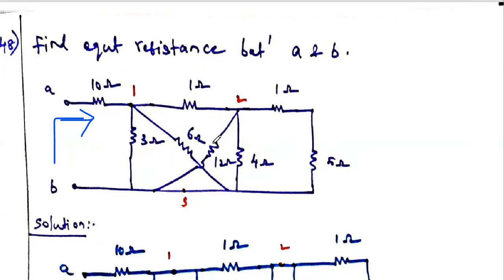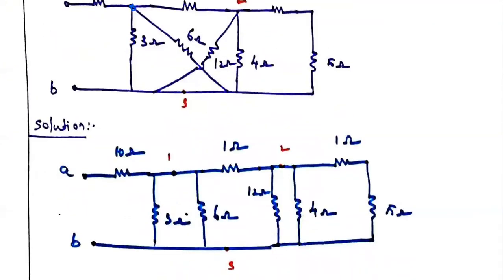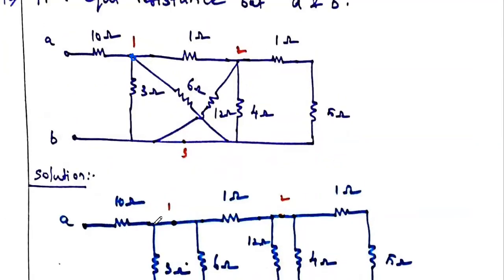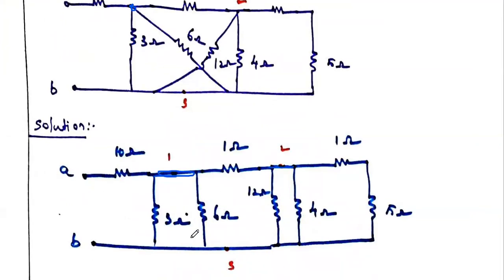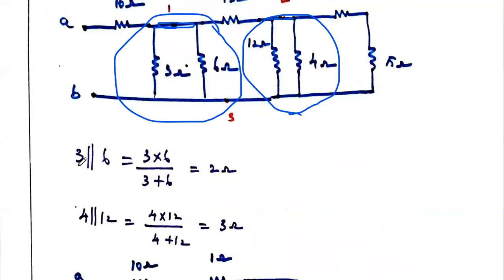Redrawing the circuit by expanding nodes one and two as lines: three-ohm and six-ohm are in parallel, giving 3×6/(3+6) = 2 ohm. The parallel combination of four and 12 gives 4×12/(4+12) = 3 ohm. The remaining resistors — 10 ohm, one ohm, one ohm, and five ohm — remain as is.